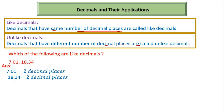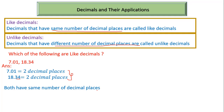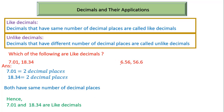The next number is 18.34. In 18.34, to the right side of the decimal point there are two places. Hence this number 18.34 has two decimal places. As you can see, both numbers have the same number of decimal places. Because of that, we will say that 7.01 and 18.34 are like decimals.